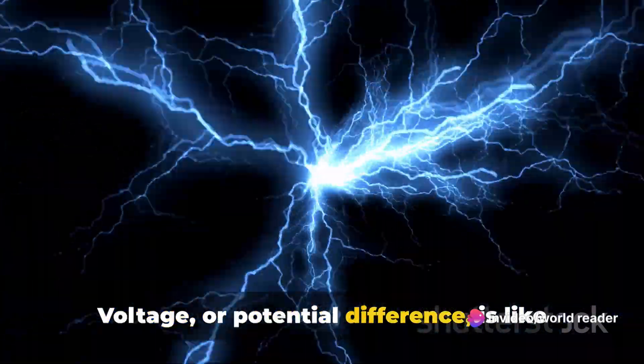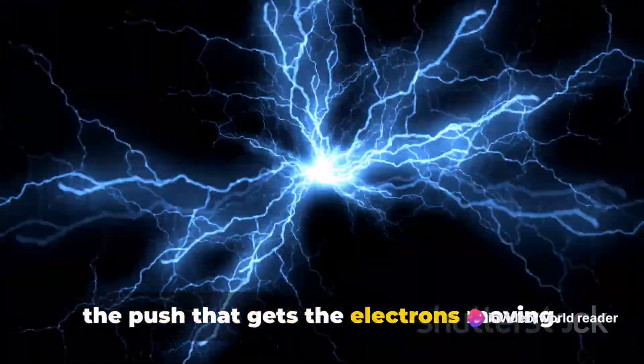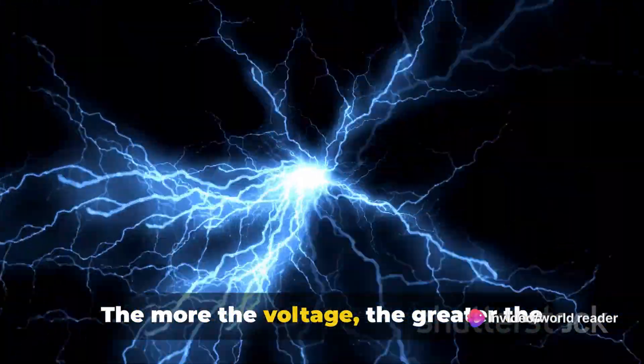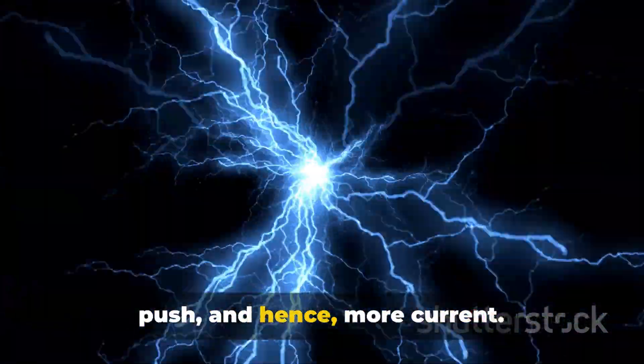Voltage, or potential difference, is like the push that gets the electrons moving. The more the voltage, the greater the push, and hence, more current.